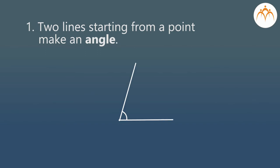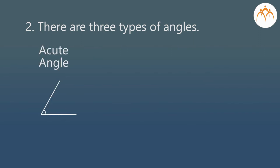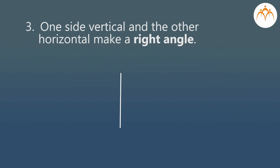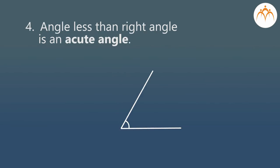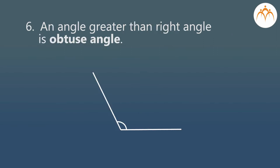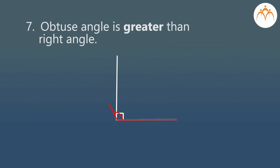What did we learn? One: two lines starting from a point make an angle. Two: there are three types of angles — acute angle, right angle, obtuse angle. Three: one side vertical and other horizontal make a right angle. Four: an angle less than a right angle is an acute angle. Five: acute angle is smaller than right angle. Six: an angle greater than right angle is obtuse angle. Seven: obtuse angle is greater than right angle.